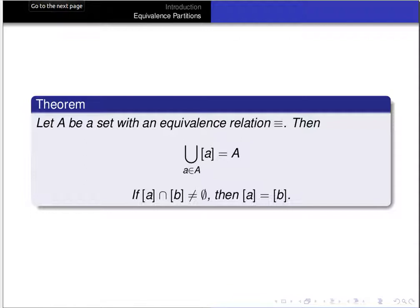So this is what we mean when we say that the equivalence classes partition the underlying set — they are either disjoint or identical, and the union of the equivalence classes is the whole set.